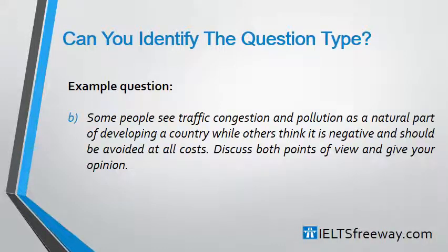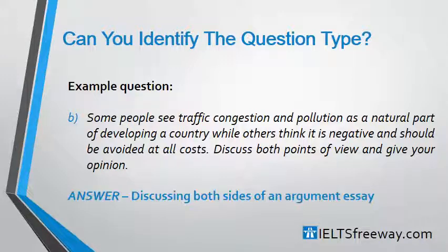Next question: 'Some people see traffic congestion and pollution as a natural part of developing a country, while others think it is negative and should be avoided at all costs. Discuss both points of view and give your opinion.' The answer is it's a discussing both sides of an argument style essay. The clue being at the end where it says, literally, 'discuss both points of view.'